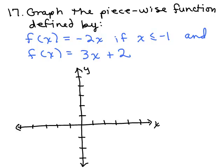All right, for number 17, we're asked to graph the piecewise function defined by f(x) equals -2x if x is less than or equal to -1, and f(x) equals 3x + 2 if x is greater than -1.